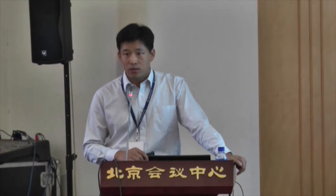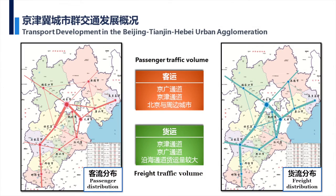In terms of spatial distribution, the Beijing-Tangshan corridor is one of the busiest transport areas, and Beijing with surrounding cities like Langfang and Baoding also has very busy transport. In terms of goods transport, we have a very big volume between Beijing and surrounding areas, especially those bulk commodities like coal transport. Hebei is a very important hub for coal transport from north to south.